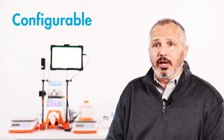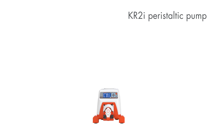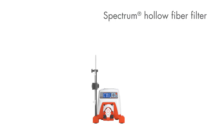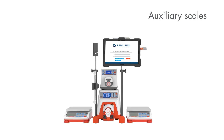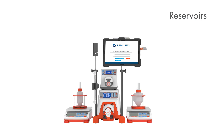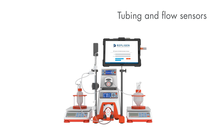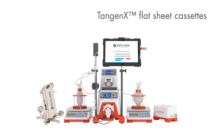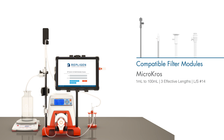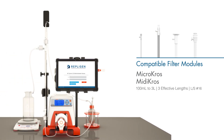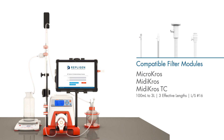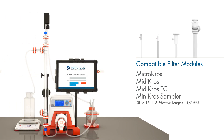The system is fully integrated for utilizing auxiliary pumps as well as scales to manage the methods of the operation, controlling either a concentration factor as well as buffer exchange volumes needed for the TFF process. The KR2i system provides all the necessary filters and disposables required for running your application. Whether you're doing lab scale or pilot scale, the same system can be utilized for both applications.